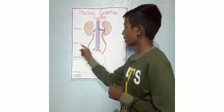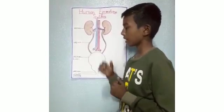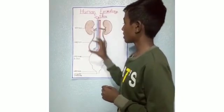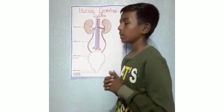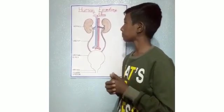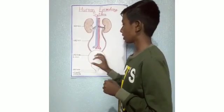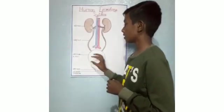a tube called ureter. Now let us see the ureter. Ureter is a tube-like structure which is connected from kidney to urinary bladder. It is used to pass the unwanted substances from kidney to urinary bladder. Now let us see the urinary bladder.